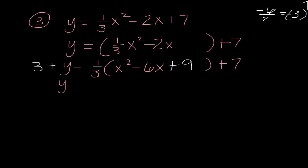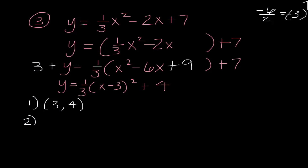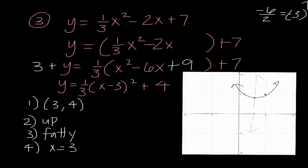So I get y equals 1/3 times the quantity x minus 3 squared plus 4. Listing characteristics: vertex is 3, 4; it is up; it is fatty; and line of symmetry is x equals 3. Let's sketch the graph — I finally made one that is semi-easy to graph. I went right 3 and up 4 to plot the vertex, then up 1 and over 2 in both directions, drew my U, and drew my line of symmetry. This is the parabola for y equals 1/3 x squared minus 2x plus 7.